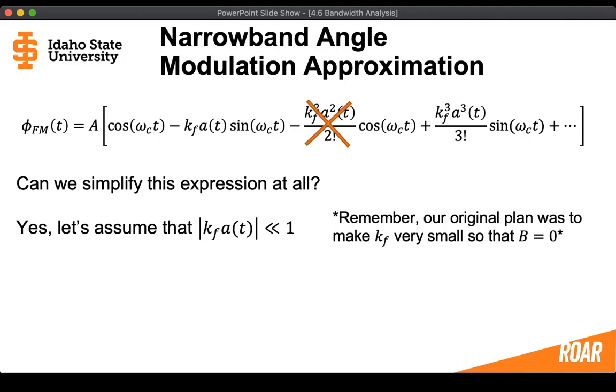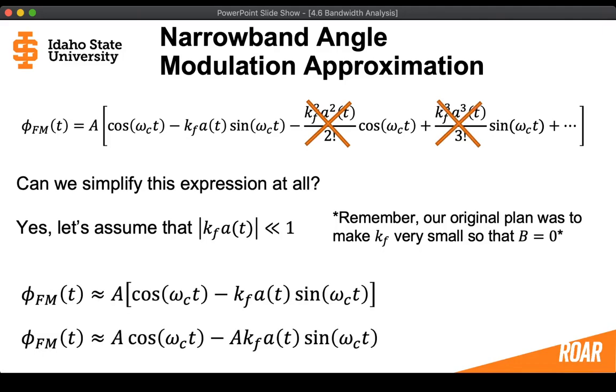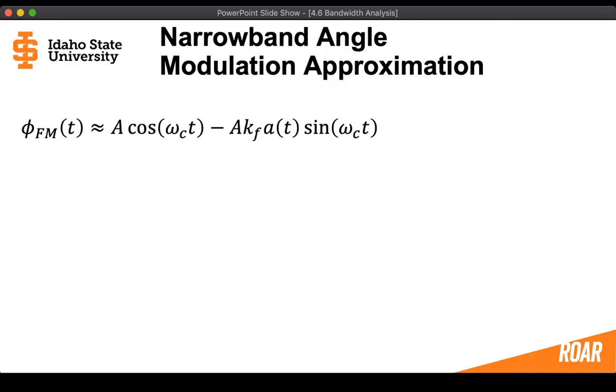So if we make it real small, we'll see that term is going to basically go away, that term is going to go away, and then any of these higher order terms from that power series expansion, those are also going to go away. That means that we're left with a narrowband approximation. That narrowband approximation is just going to contain the first two terms where we've applied this approximation.